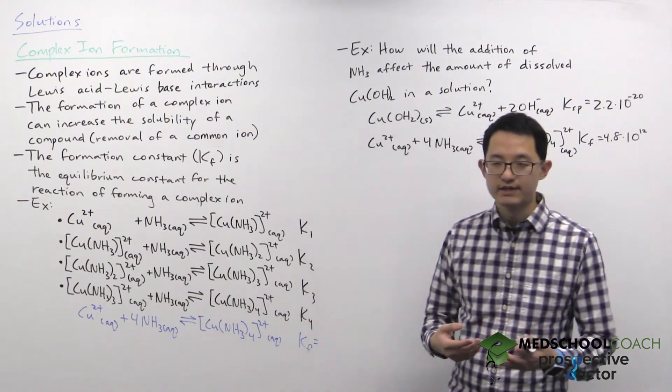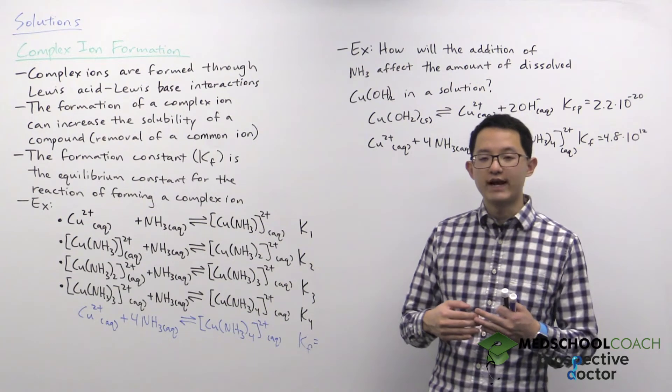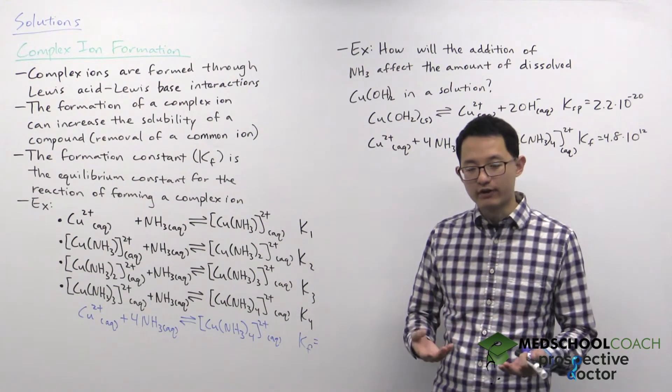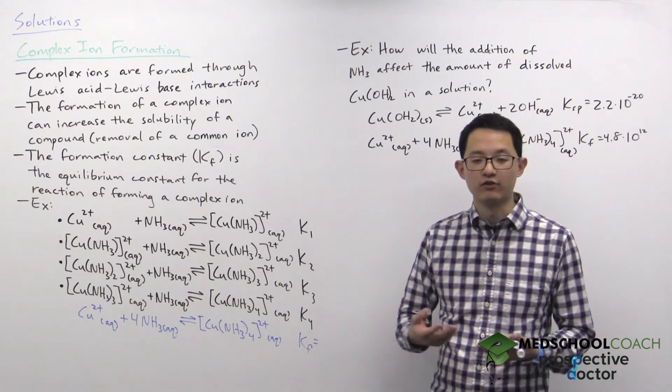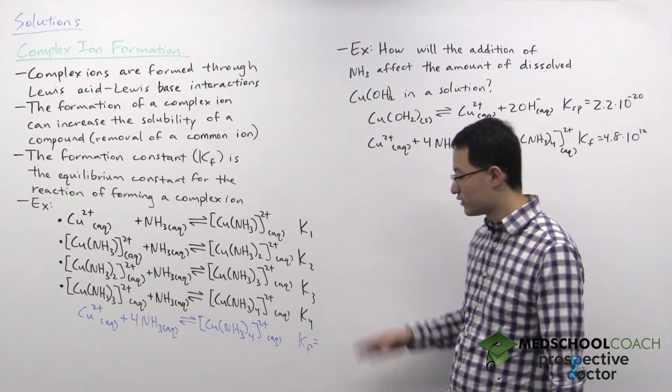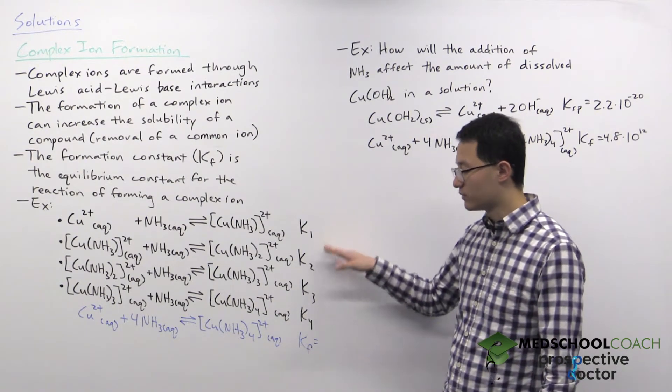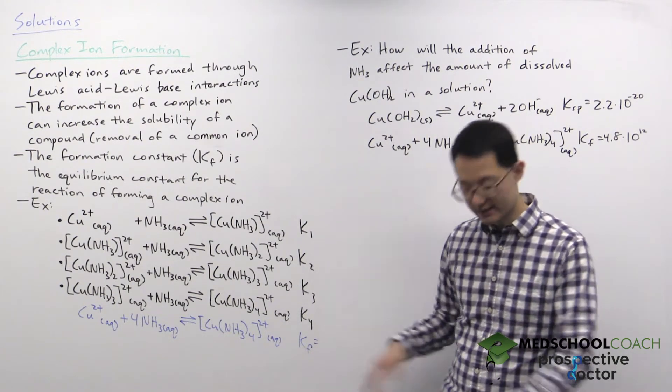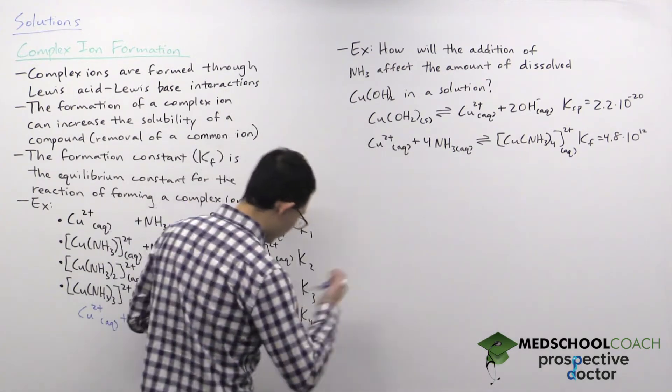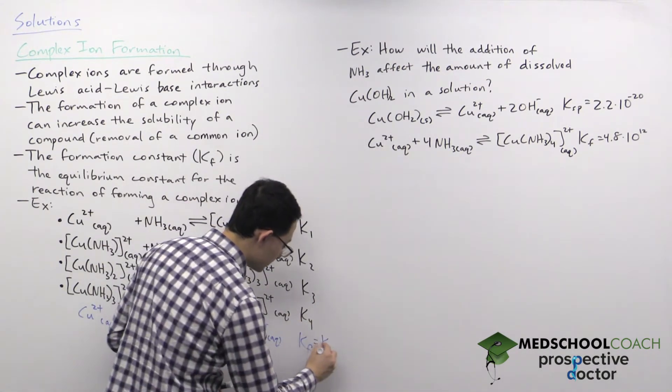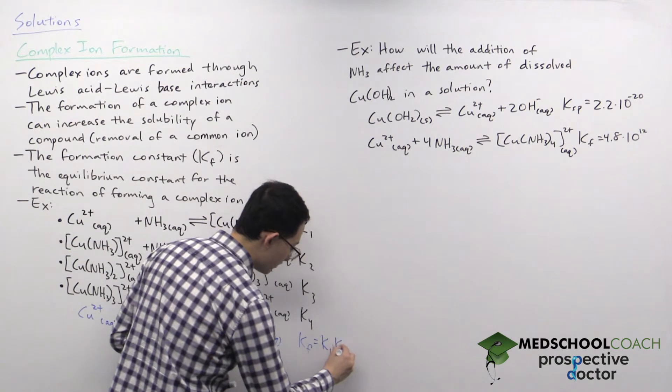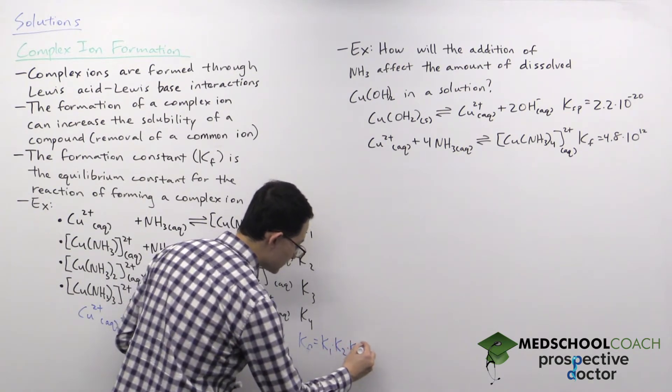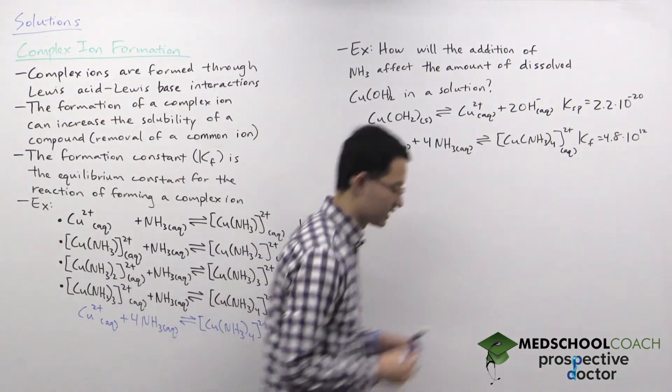So the question here is if I add these four reactions how can I evaluate the equilibrium constant for the overall reaction? The way you can do that is by multiplying the equilibrium constants together. So that means here the formation constant Kf would be equal to the product of K1 times K2 times K3 times K4.